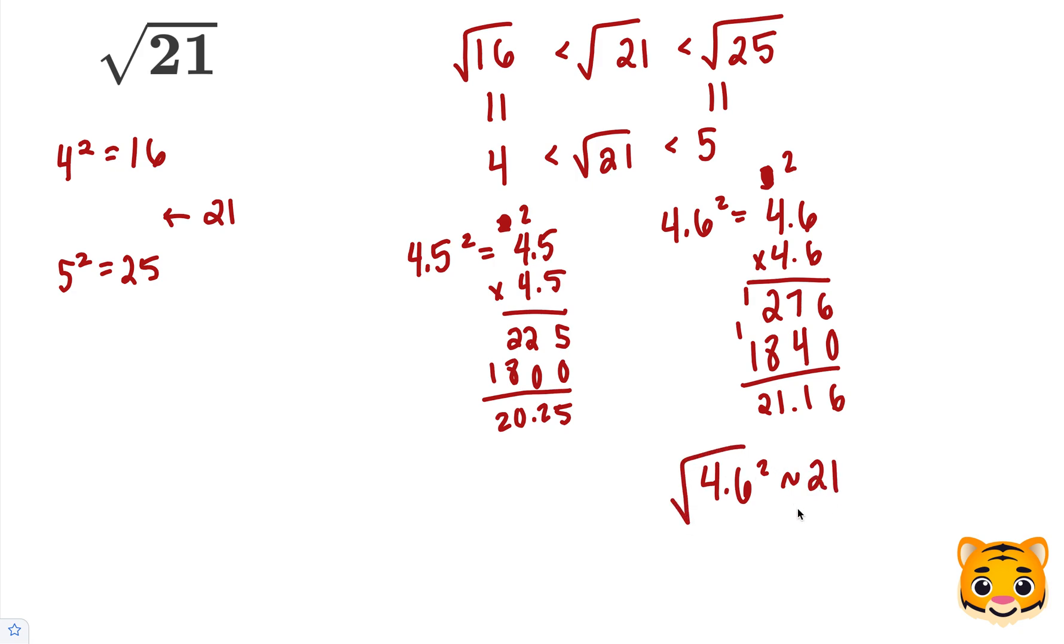Now if we take the square root of both sides, we can cancel out the squared and the 4.6 to get 4.6 is approximately the square root of 21.